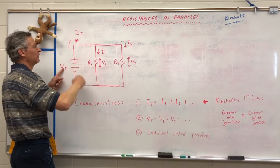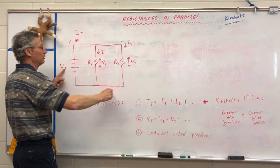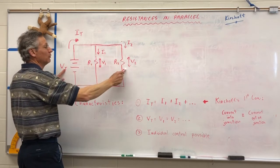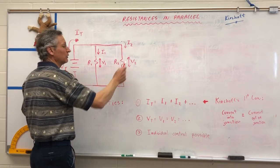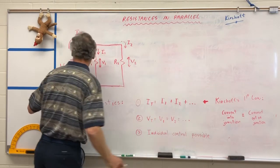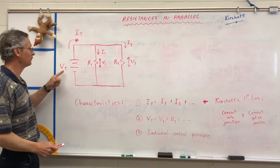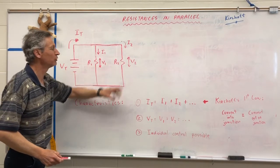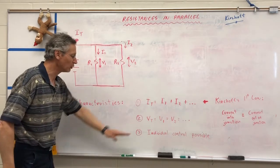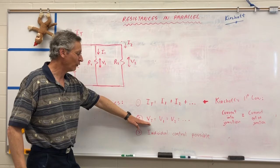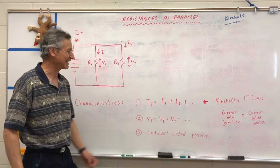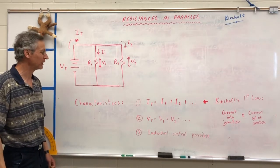So however many branches you have, the voltages are going to be the same. This voltage equals this voltage, which equals this voltage, and so on — even if you had 50 or 100 branches. All the voltages are the same. The voltage increase equals every single voltage drop across each branch. That is the second important characteristic of a parallel circuit.